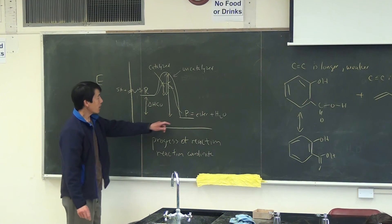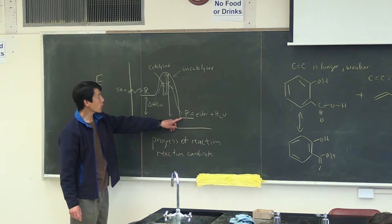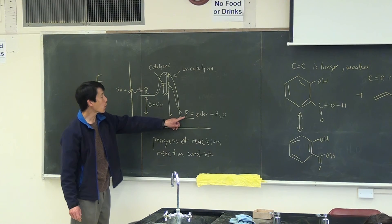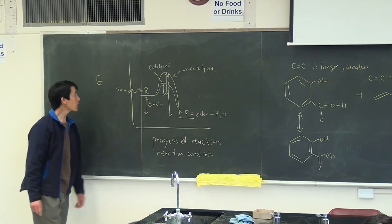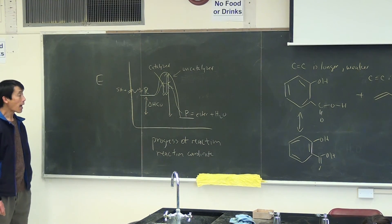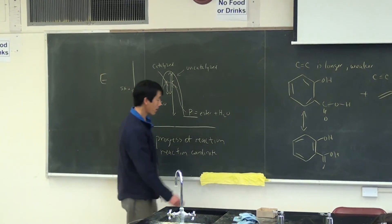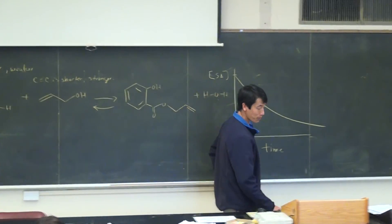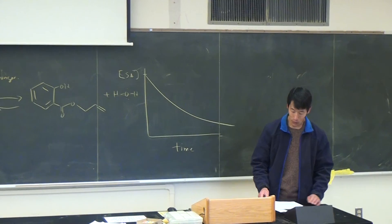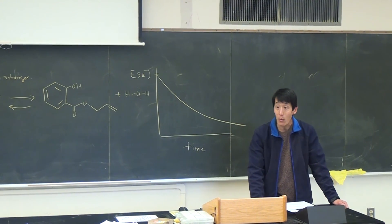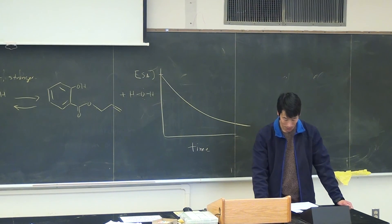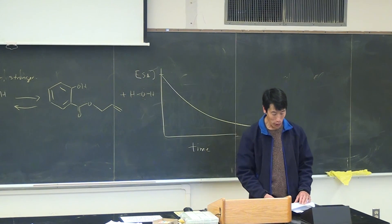And that means the reaction is slower. Note also that the reverse direction, or the reverse reaction, is endothermic, because the ester plus water is lower in energy than the salicylic acid plus the alcohol. So it turns out that these reaction energy diagrams can give you quite a bit of information about a reaction.